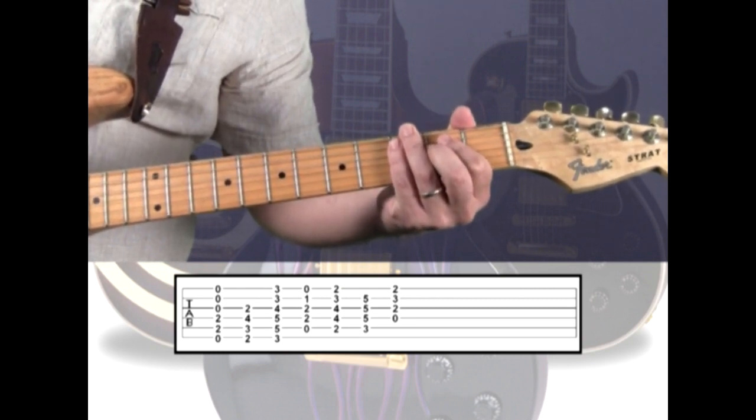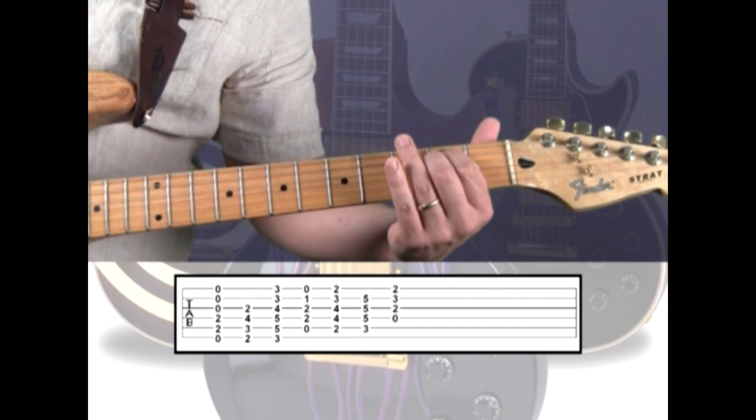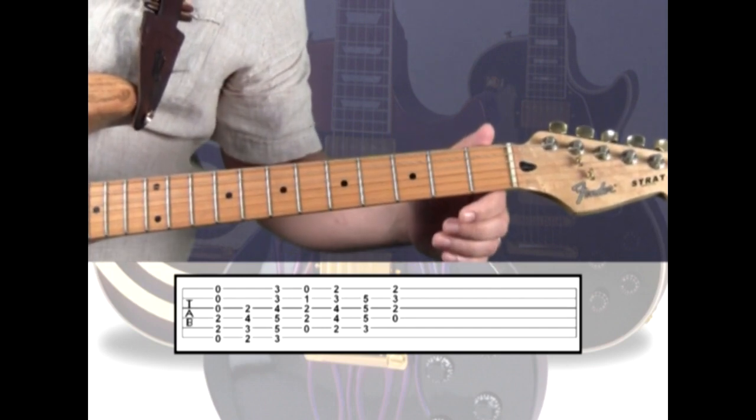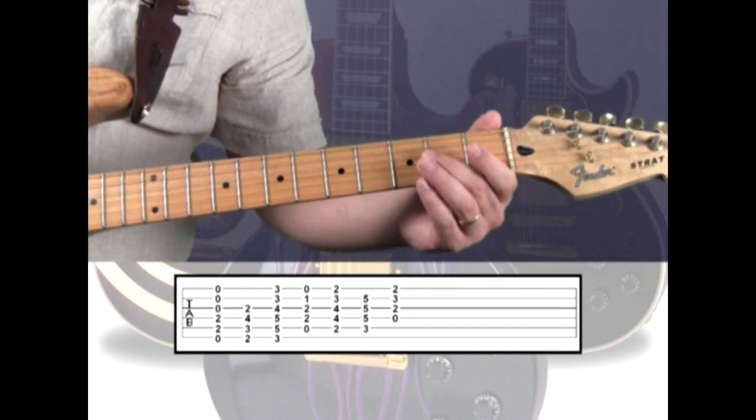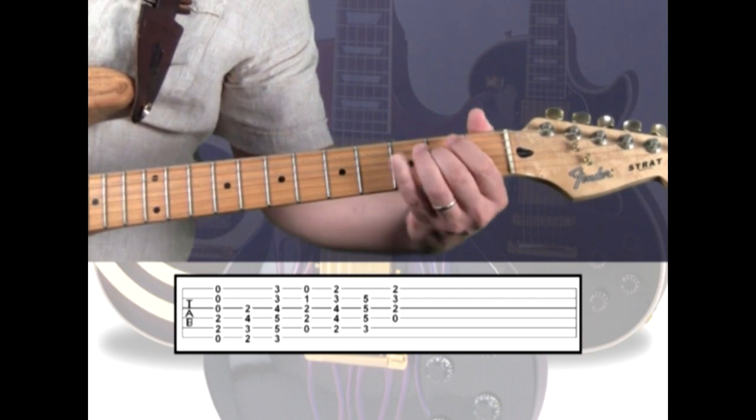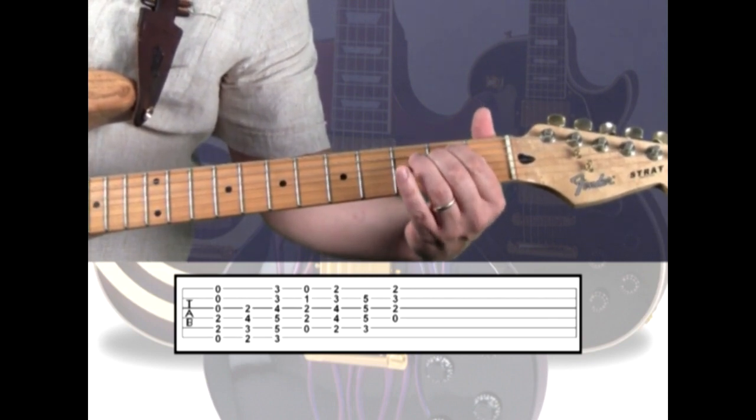The fingering I'm using for E minor is open on strings 1, 2, and 3. The middle finger on the 4th string 2nd fret, index on the 5th string 2nd, and the 6th string is open.